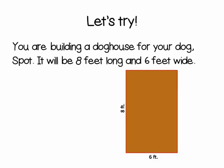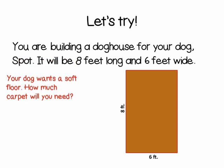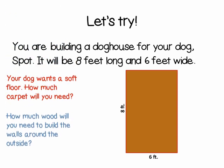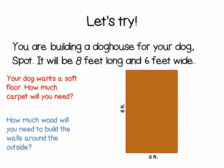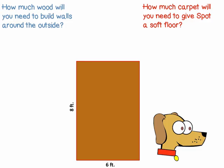Let's look at a few examples. You are building a doghouse for your dog Spot. It will be 8 feet long and 6 feet wide. Your dog wants a soft floor, so how much carpet will you need? How much wood will you need to build the walls around the outside?